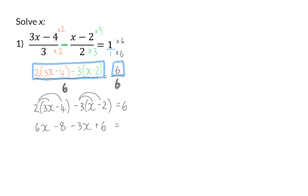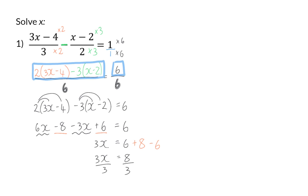If you are unsure about these first few steps, go and watch the video on simplifying fractions. Adding up my like terms on the left-hand side means that I will have 3x, and on the right I already have 6, and the minus 8 will be added on the right, and the plus 6 will be subtracted. This means that we now have 3x is equal to 8, and once I've divided both sides by 3, the final answer will be x is equal to 8 over 3.